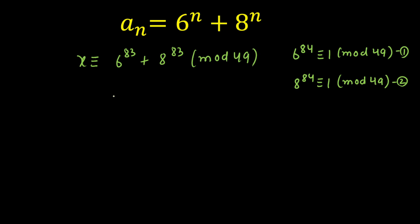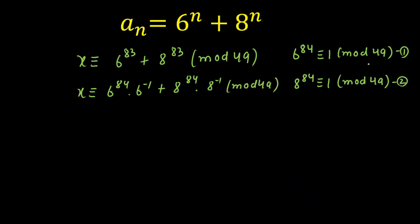Using the results from the previous step — 6^84 ≡ 1 (mod 49) and 8^84 ≡ 1 (mod 49) — I will convert the exponent 83 into 84 minus 1. So X ≡ 6^84 · 6^(−1) + 8^84 · 8^(−1) (mod 49). Applying the two results, this simplifies to X ≡ 6^(−1) + 8^(−1) (mod 49).